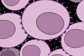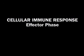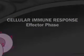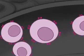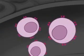The cloned T cells circulate in the blood and lymph. In the effector phase of the cellular immune response, activated cytotoxic T cells destroy virus-infected cells wherever they encounter them.